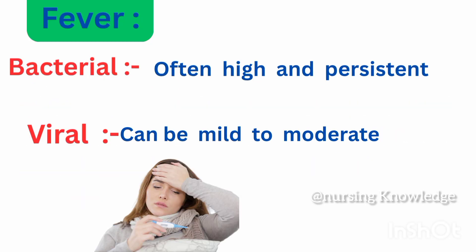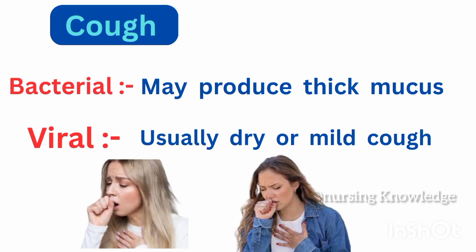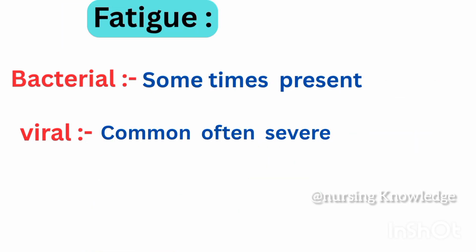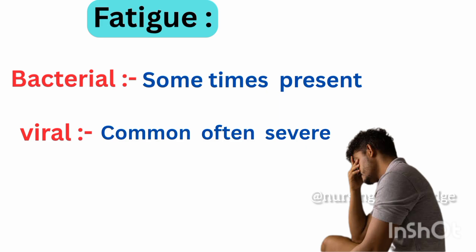Fever: Bacterial fever is often high and persistent, above 37 degrees Celsius. Viral fever can be mild to moderate. Cough: Bacterial infection may produce thick mucus, while viral infection usually causes a mild cough. Fatigue: Bacterial fatigue is sometimes present, while viral fatigue is common and often severe.